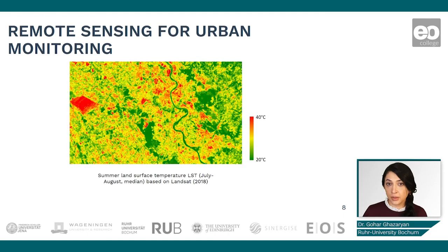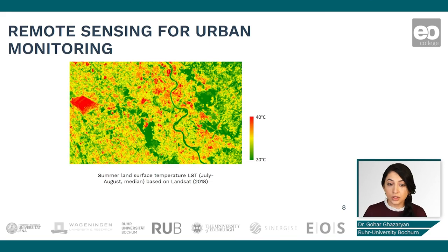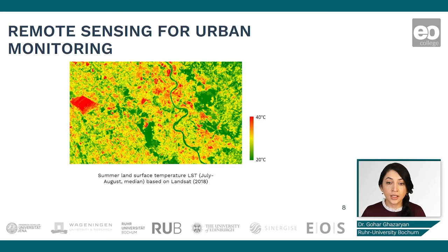Besides multi-spectral and radar data, other information from remote sensing can be used for urban monitoring. For example, land surface temperature derived from thermal data can be used to assess thermal conditions in urban areas, monitor the urban heat island impact, and look at changes in warming and cooling areas over a long time span.